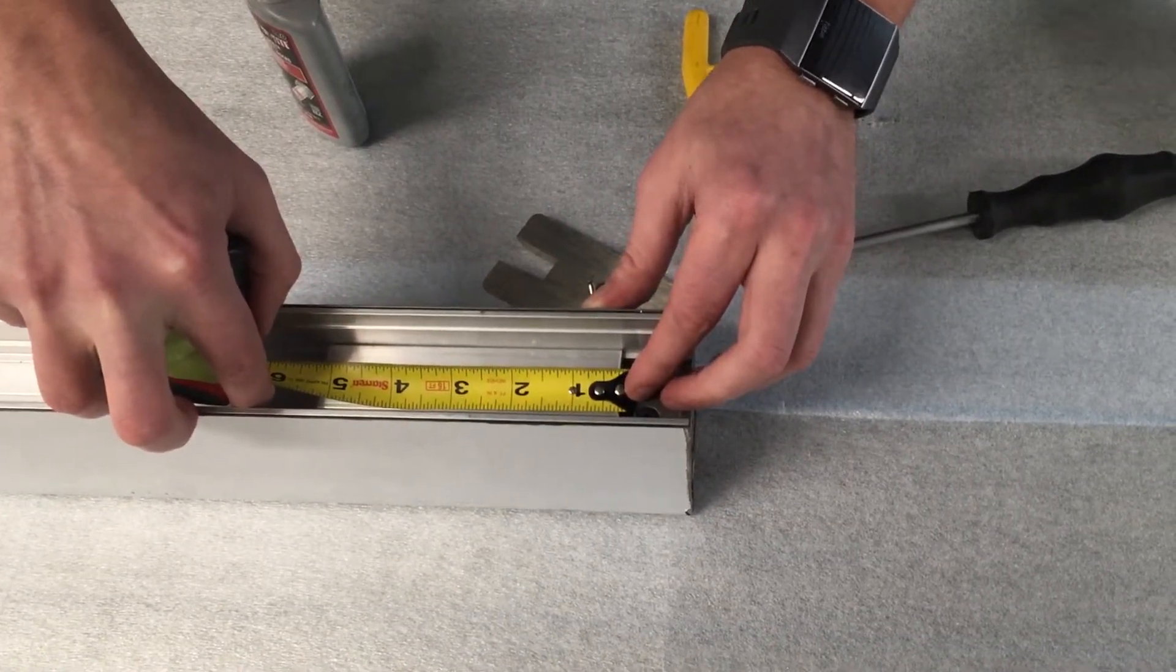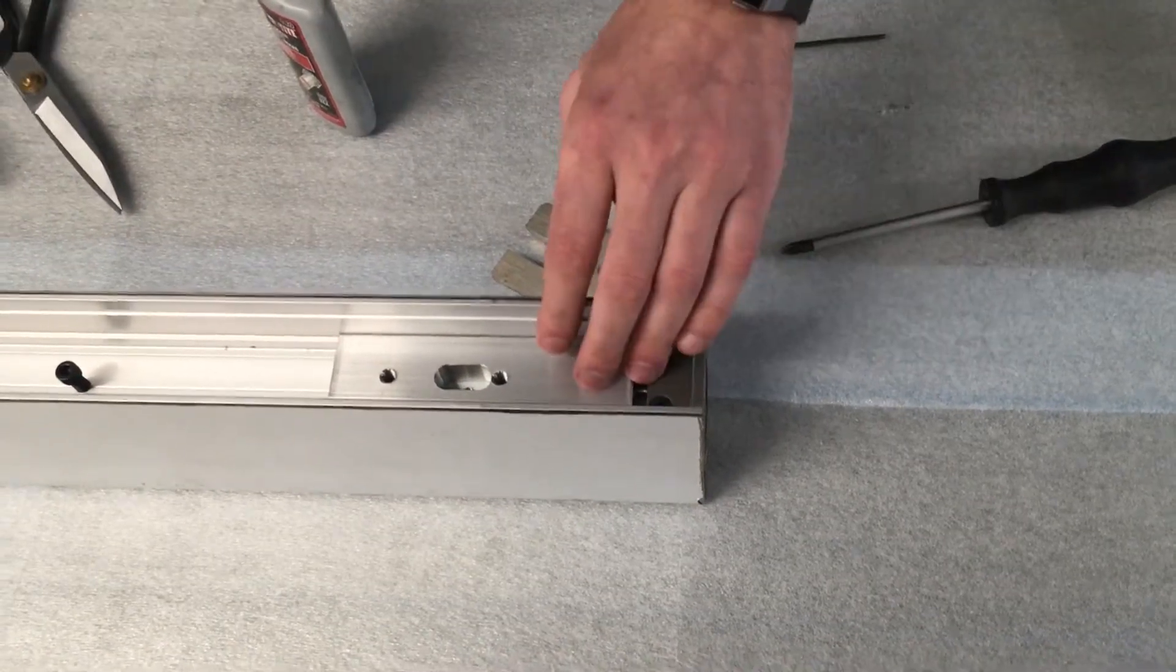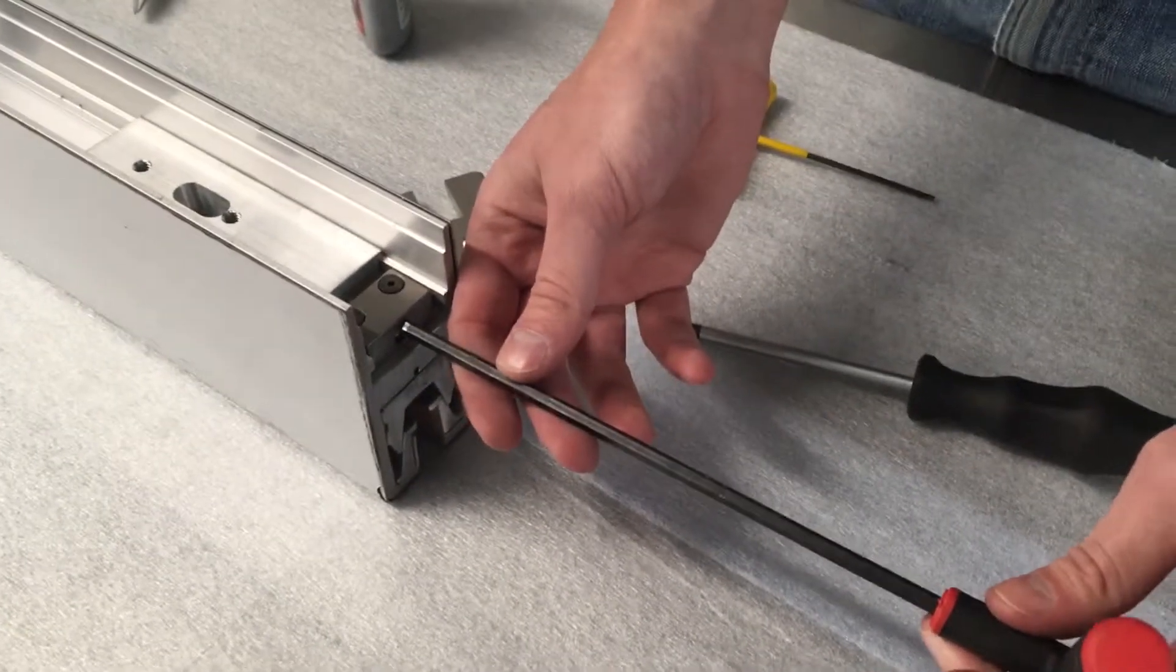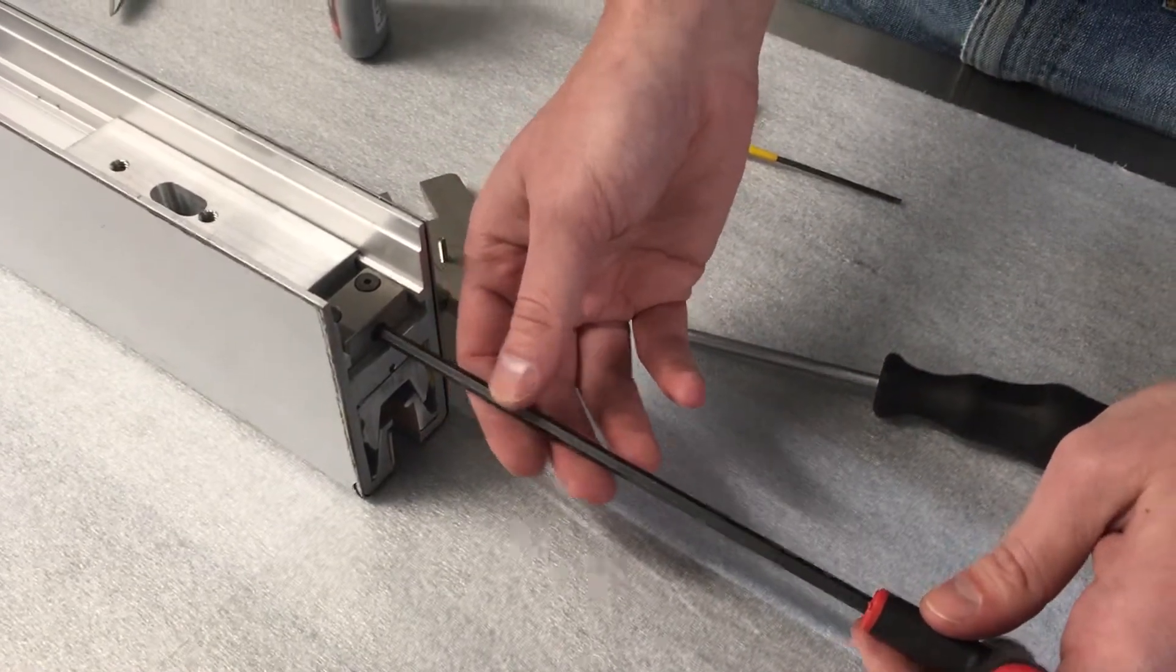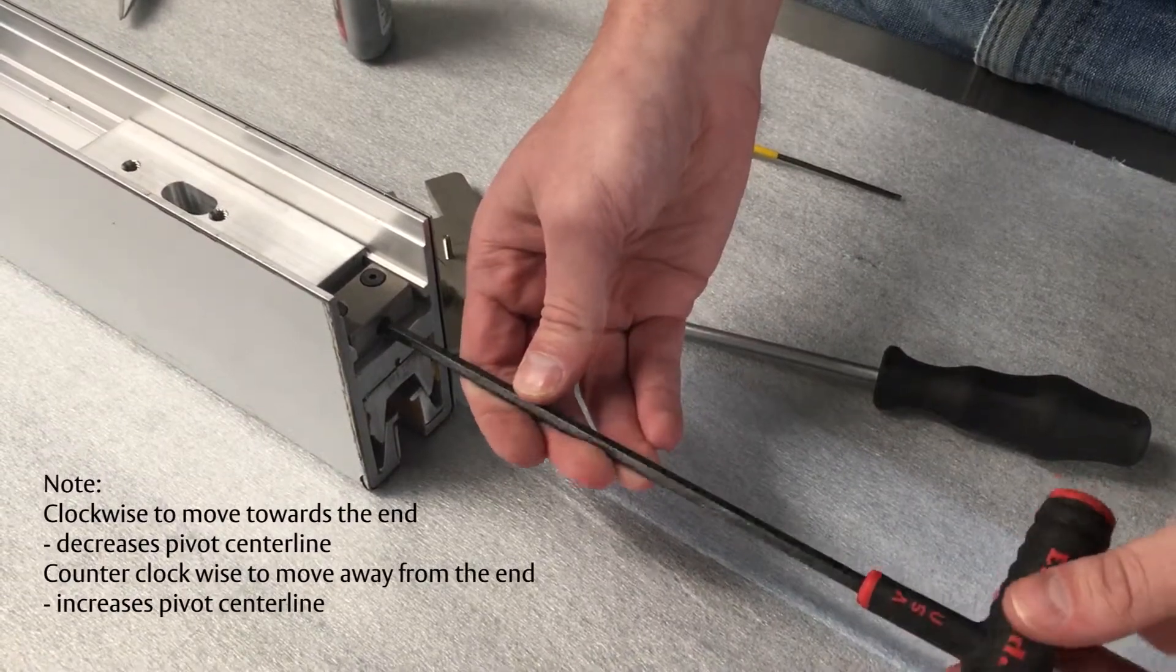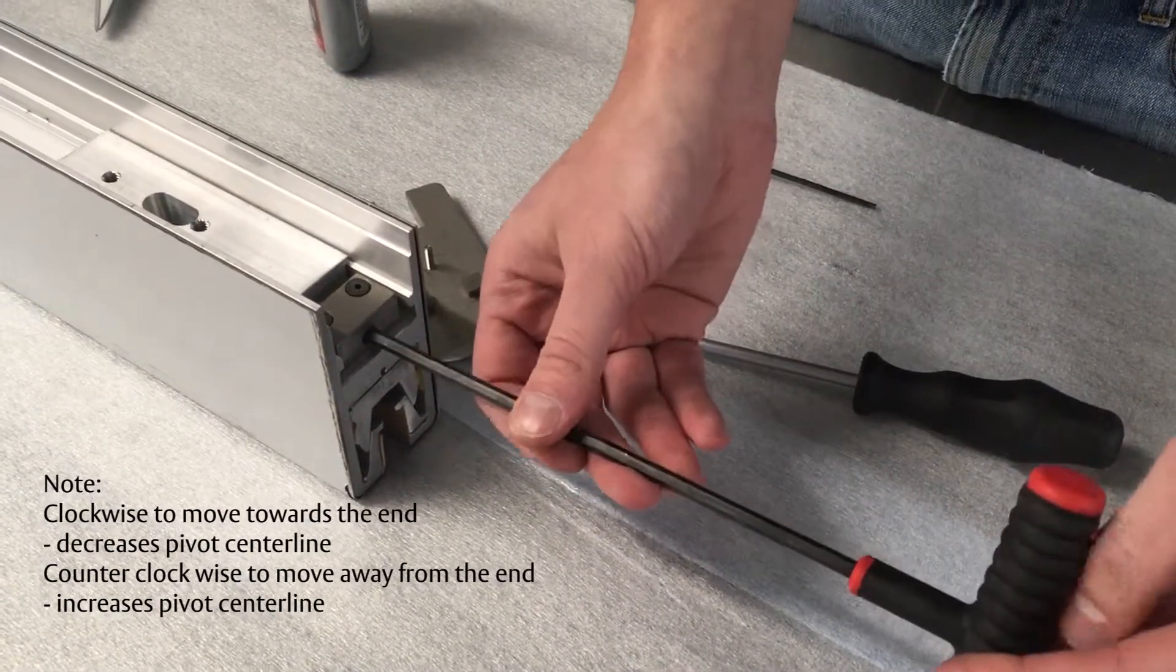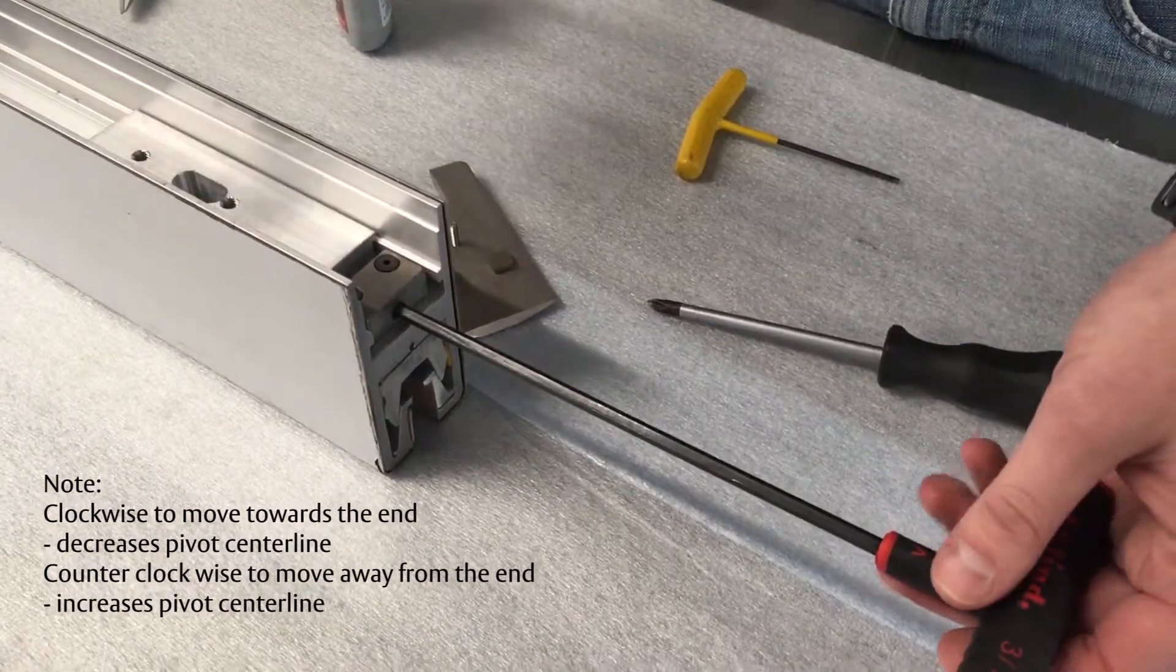We do need to make a slight adjustment. To adjust that distance, use a 3/16 Allen key and insert it into the back of the adjuster block into the fastener. Turn clockwise to move the PVPL closer to the edge of the end cap and counterclockwise to move the PVPL away from the edge of the end cap.